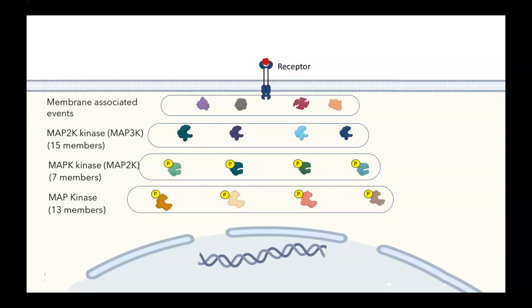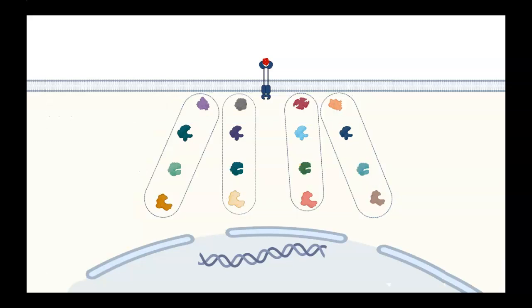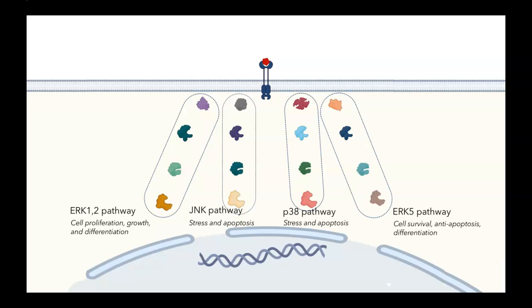I know that this figure is pretty overwhelming, but the good news is that we can divide MAP kinases into four general pathways. These are ERK-1-2 pathway, involved in cell proliferation, growth, and differentiation. There's the JNK pathway and the P38 pathway, both involved in stress and apoptosis. And then the fourth type of pathway is the ERK-5 pathway. We know less about this, but it's involved in cell survival, anti-apoptosis, and differentiation. These different pathways get their names from the particular MAP kinase protein family member that's found in the pathway.